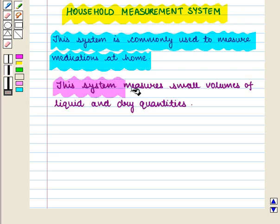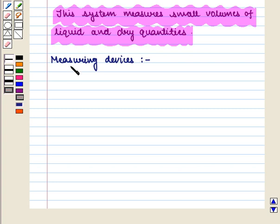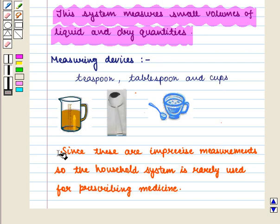This system measures small volumes of liquid and dry quantities. Here we use measuring devices such as teaspoon, tablespoon, and cups. Since these are imprecise measurements, the household system is rarely used for prescribing medicine.